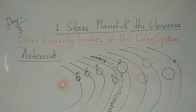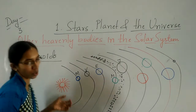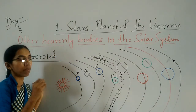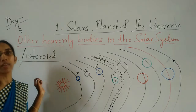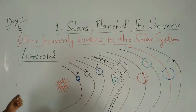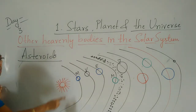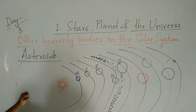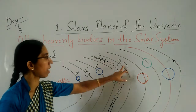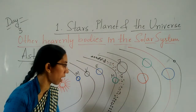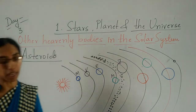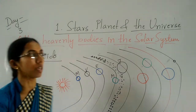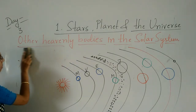So children, this is about the asteroids. Remember: asteroids are very tiny celestial bodies that revolve around the sun. They orbit between Mars and Jupiter and form what is called the asteroid belt.